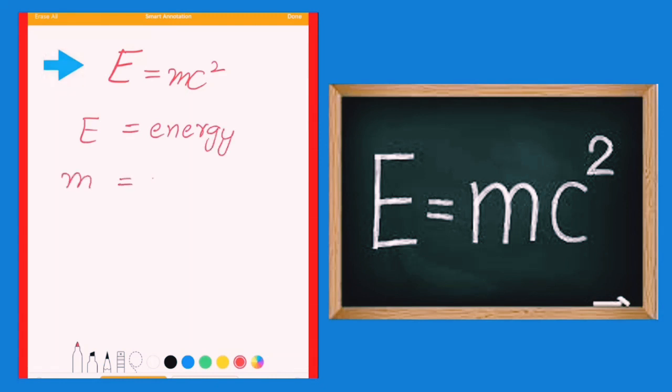Now let's take a look at the Equation of Relativity, that is E equals MC squared, where E stands for Energy, M stands for Mass, and C stands for Speed of Light, that is 3 times 10 to the power 8 meters per second.